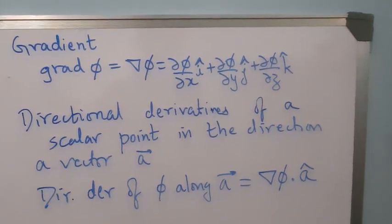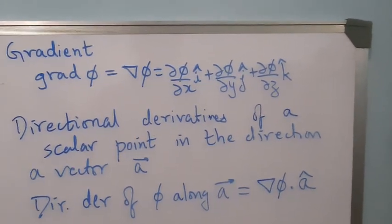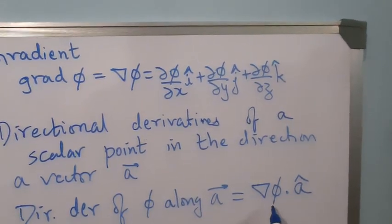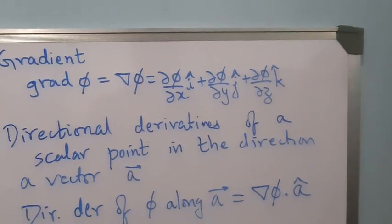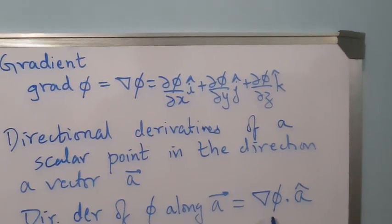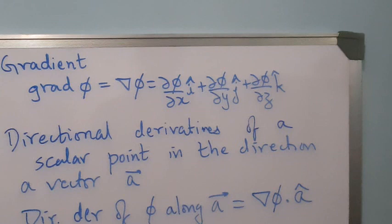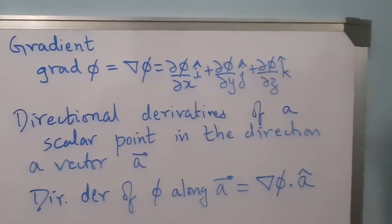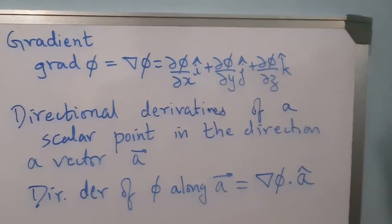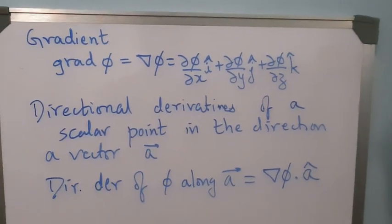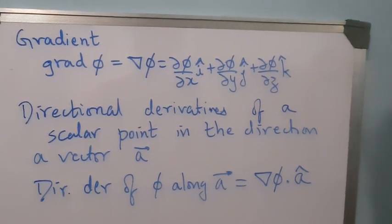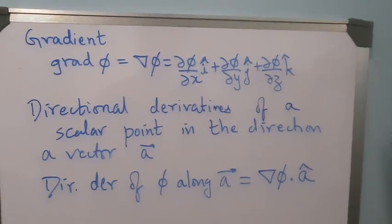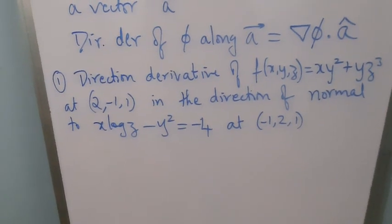Now, since grad φ represents the rate of change of φ along the x-axis, y-axis, and z-axis, when we find the directional derivative it gives the rate of change of φ in the direction of vector a. We'll take a few examples to see how to find the directional derivative of φ along vector a.